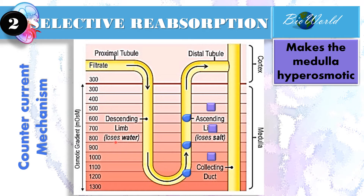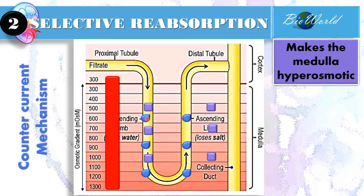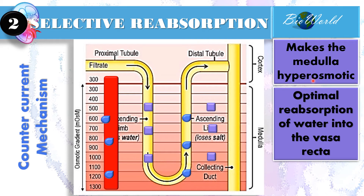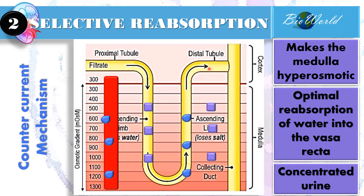Since the medulla is hyperosmotic, when the filtrate flows downwards into the descending limb, the filtrate loses water — water will diffuse out by osmosis into the vasa recta. So reabsorption of water is made possible because of the diffusion of salt in the ascending limb. This is the benefit of the counter-current mechanism. Besides making the medulla hyperosmotic, it ensures optimal reabsorption of water into the vasa recta so that when the urine is finally formed, the urine will contain minimum amounts of water. The urine produced will be concentrated.